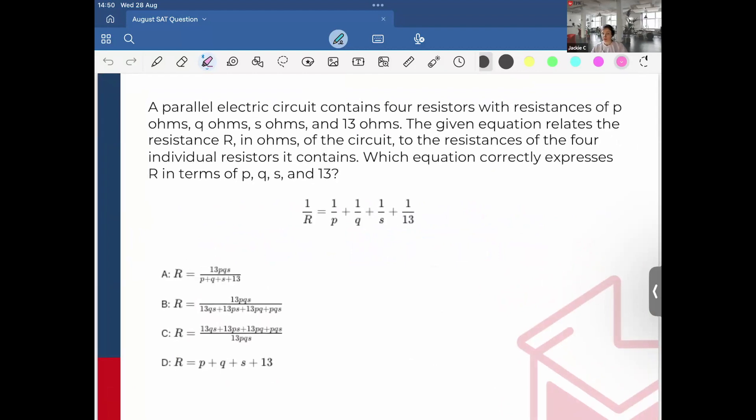So, example here. A parallel electric circuit contains four resistors with resistances of p ohms, q ohms, s ohms, and 13 ohms. The given equation relates the resistance in ohms of the circuit to the resistances of the four individual resistors it contains. Which equation correctly expresses R in terms of p, q, s, and 13?